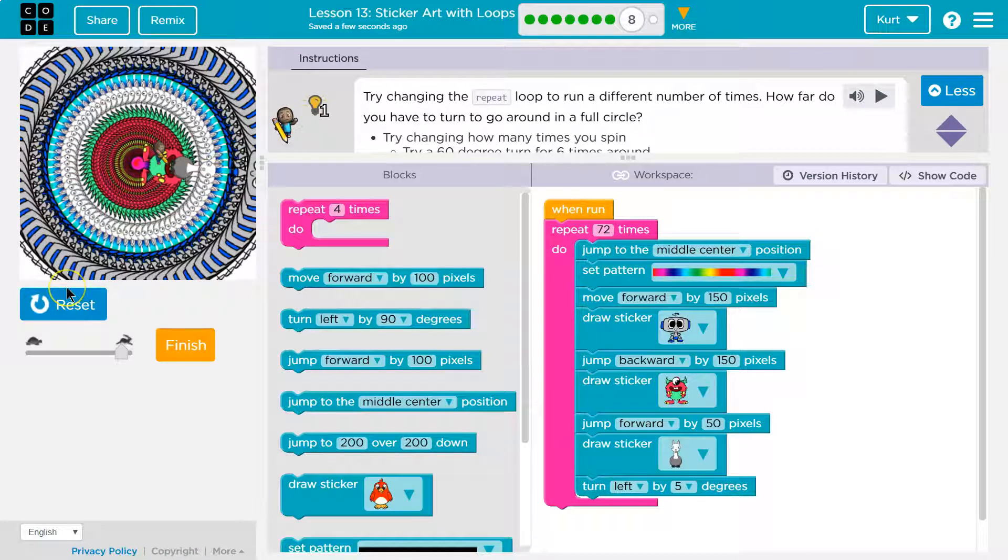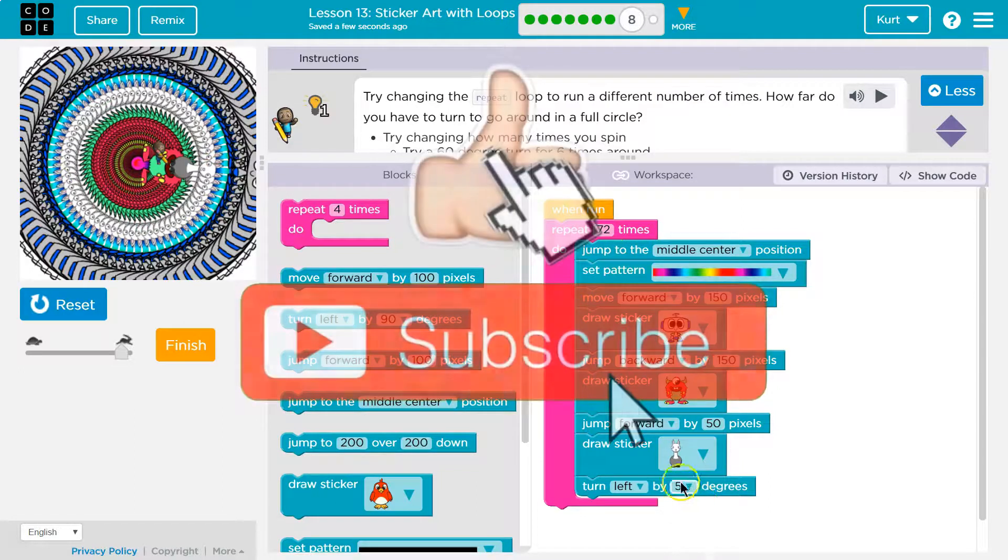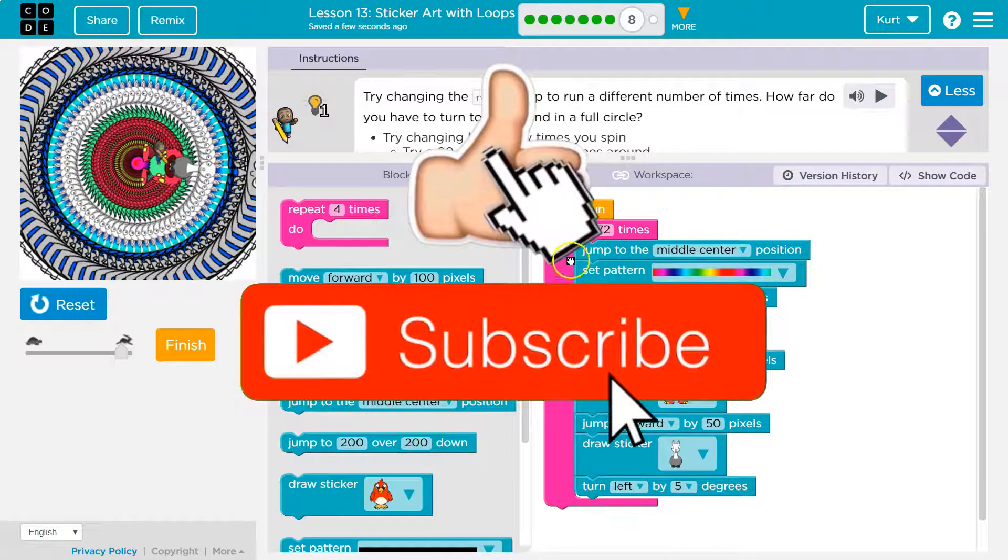So awesome. I'm actually leaving mine at that. So what you got to keep in mind is you just want to account for how many times you're running it and then multiply it by the degrees you're trying to get that to be 360.